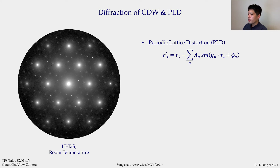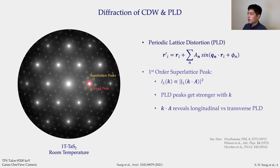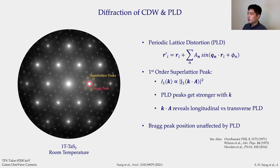Luckily for us, diffraction is very good at detecting PLDs. Here is a diffraction pattern of 1T TaS₂ at room temperature. Bright peaks are normal Bragg peaks, and the decorative peaks nearby are superlattice peaks due to PLDs. Analytically, the diffraction pattern of PLDs results in first-order superlattice peaks I₁ that are proportional to Bessel function J₁ of k·a, where k is the position of the superlattice peaks and a is the PLD displacement vector. This means that superlattice peaks become more prominent at high k, and you can tell whether PLDs are longitudinal or transverse. Importantly, Bragg peak positions are unaffected by PLDs — intensities are simply redistributed into the superlattice peaks.